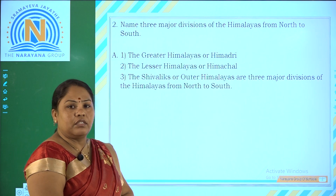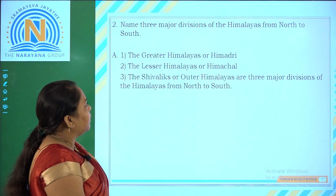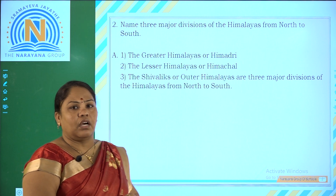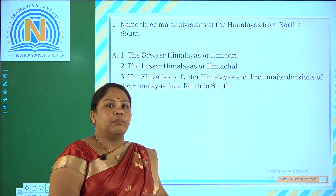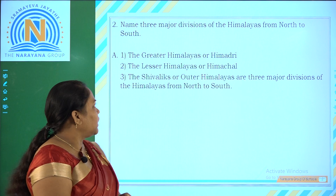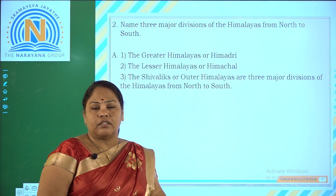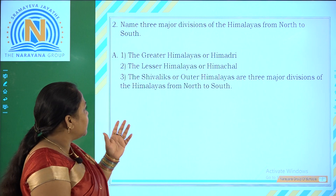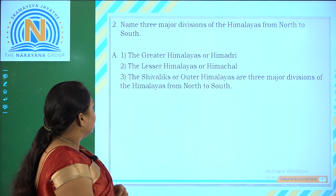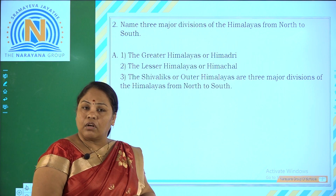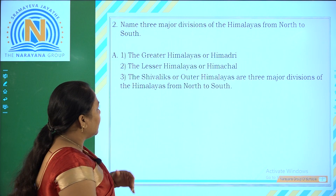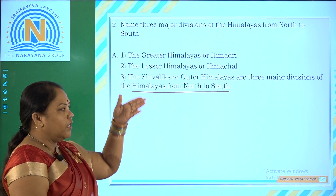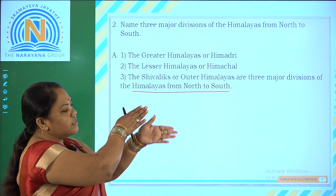Our second question is: name three major divisions of the Himalayas from North to South. The Greater Himalayas, also called Himadri; the Lesser Himalayas, also called Himachal; and the Shivaliks, also called the Outer Himalayas. These are the three major divisions of the Himalayas from North to South.